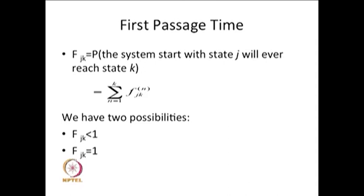The second case says with probability one you will always reach state k whatever be the number of steps starting from state j. So our interest is both less than one as well as equal to one. When f_jk equals one, that gives a probability distribution and that distribution is called the first passage time distribution.